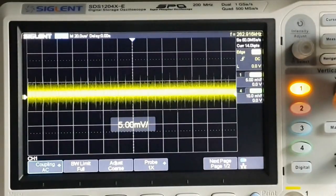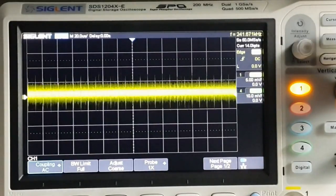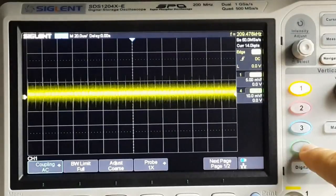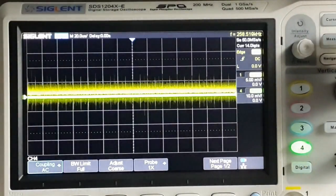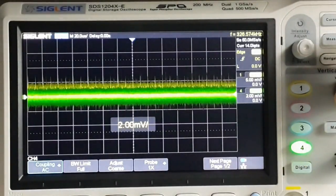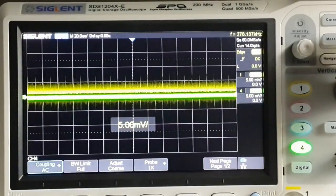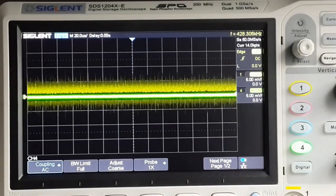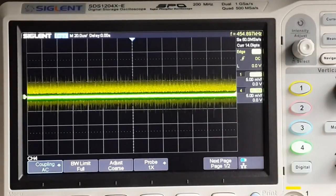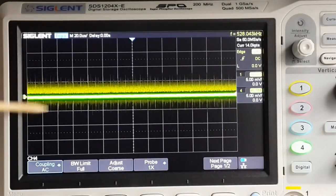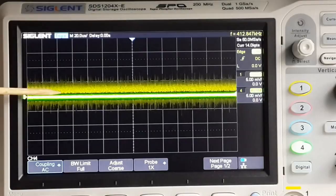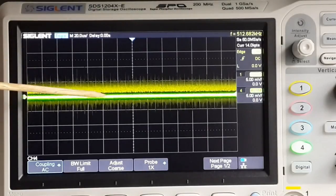5 millivolts per division, channel 4. 5 millivolts per division, they are in the same scale, and the noise level of the power supply is greater than the noise level of the function generator.